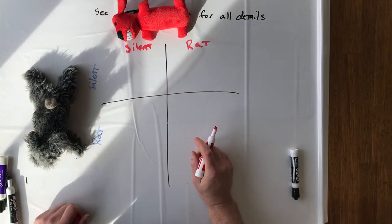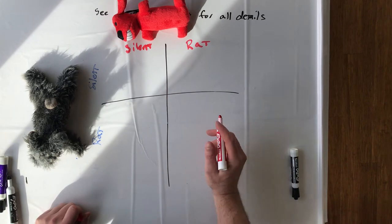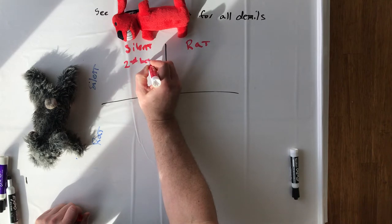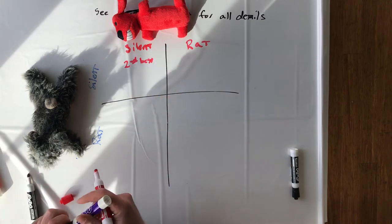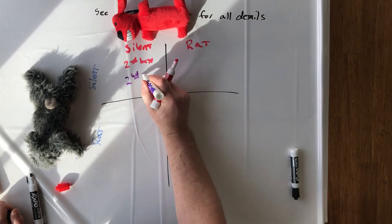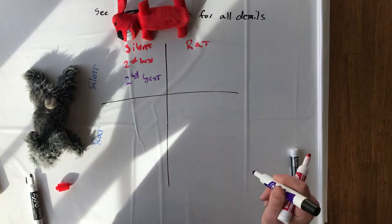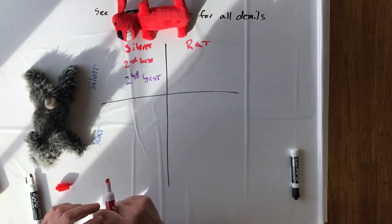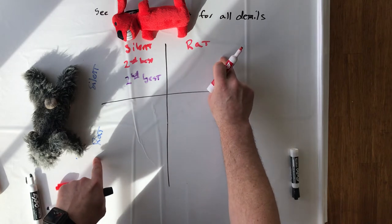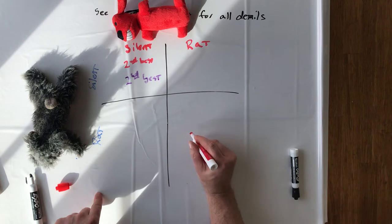So if they both stay silent, both of them are going to get their second best outcome. Rabbit is going to get second best. And in the written lectures, I give you sort of possible sentences and tell the story a little bit more, but let's not worry about that. And then in the case where they both rat each other out, they're both going to get their second worst outcome.